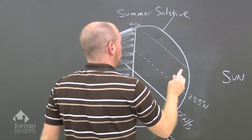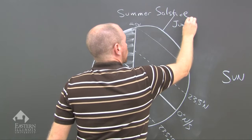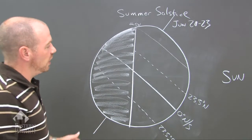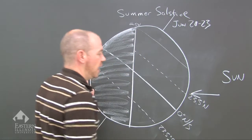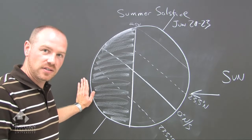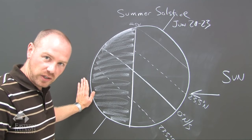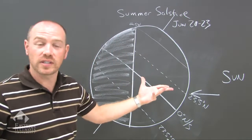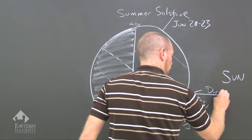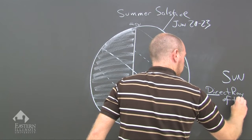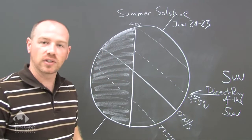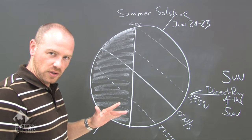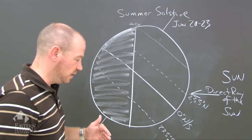Summer solstice occurs on one day, June 20th through the 23rd. With this, I want to point out that the direct ray of the Sun is here at 23.5 degrees north — that is its solar declination. The solar declination is the direct ray of the Sun. On June 21st, for example, the direct ray of the Sun is at 23.5 degrees north. Now think about what's happening during the winter solstice — where is the direct ray of the Sun? It should be opposite.